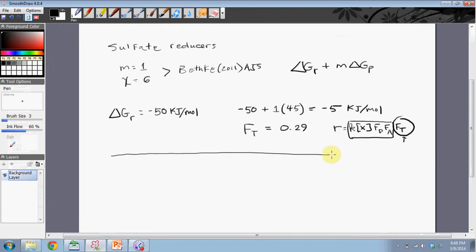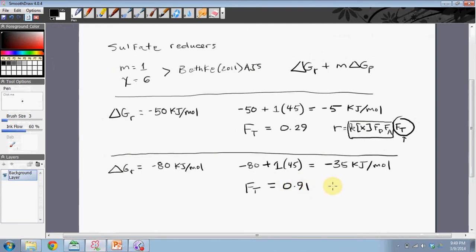Alright, let's imagine a different situation - a situation in which sulfate reduction is more energetically favorable. Let's say the reaction yield is negative 80 kilojoules per mole. So in this case, when we calculate our numerator, we get negative 80 plus 1 times 45. The value becomes negative 35 kilojoules per mole. And when we carry that through and determine our thermodynamic potential factor, we end up with a value of 0.91.